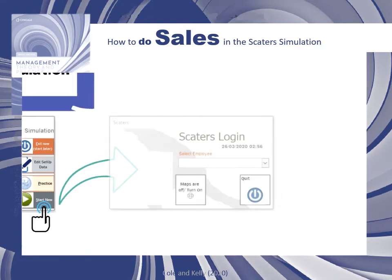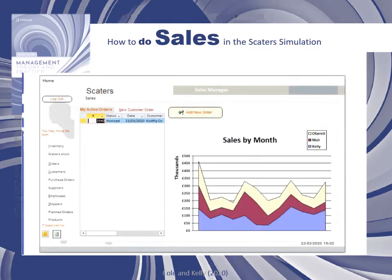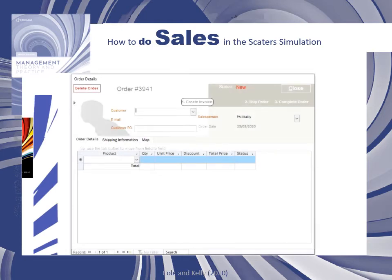Once you have installed and configured the software and are ready to go and have pressed start, you can log in as the sales manager. The main user interface that you'll see is the sales manager home form, which shows active sales orders, the sales performance, and allows you to enter new orders when customers place them with you.